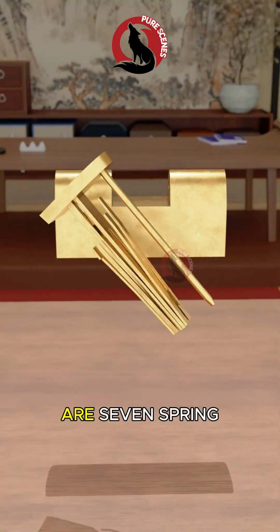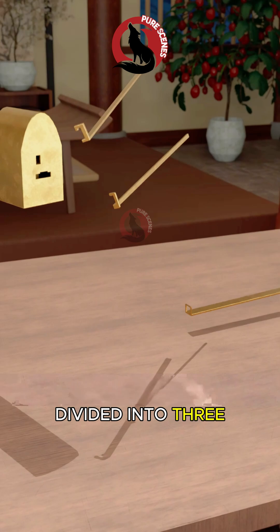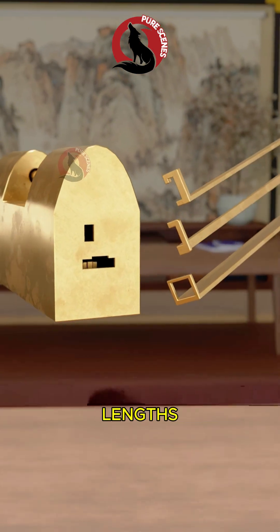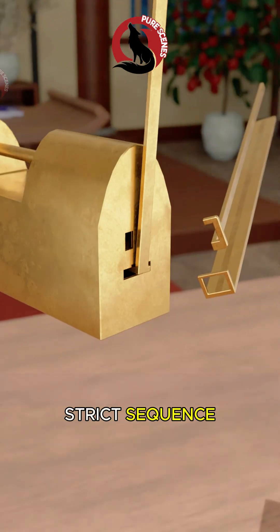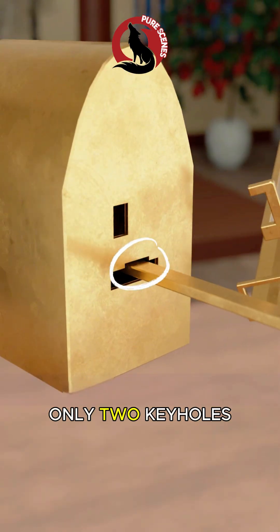Inside this lock are seven spring strips divided into three separate groups, each group made with different strip lengths. Unlocking it requires three different keys used in a strict sequence, even though the lock body has only two keyholes.